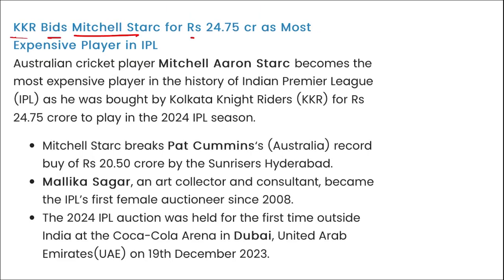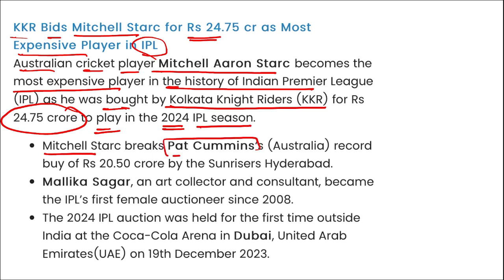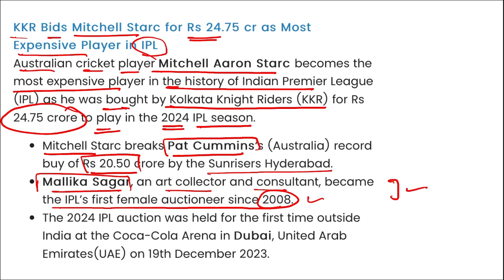KKR bid ₹24.75 crore for Mitchell Starc, making him the most expensive player in IPL history. Australian cricketer Mitchell Starc was bought by Kolkata Knight Riders for ₹24.75 crore to play in the 2024 IPL season, breaking Pat Cummins' record of ₹20.5 crore set by Sunrisers Hyderabad. Malika Sagar, an art collector and consultant, became the IPL's first female auctioneer since 2008. The 2024 IPL auction was held for the first time outside India at the Coca-Cola Arena in Dubai, UAE on 19th December 2023.